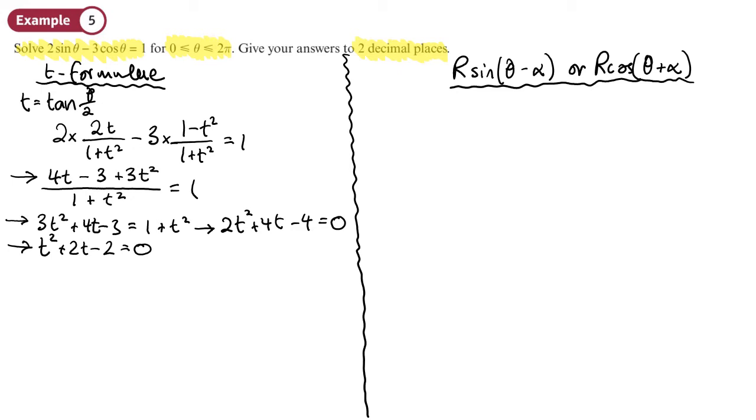Now this won't factorise. I want to find the value of t. The numbers are quite small, so let's complete the square and see what we get. So I'll have t plus 1 all squared, and that bracket will give me a plus 1 which I need to get rid of. So that will give me t plus 1 all squared minus 3 equals 0. So that will be 3 on the other side. Then I can find my value of t equal to minus 1 plus or minus root 3.